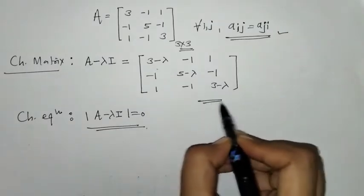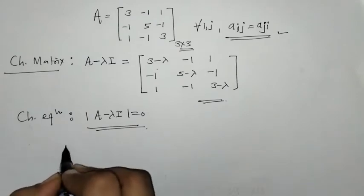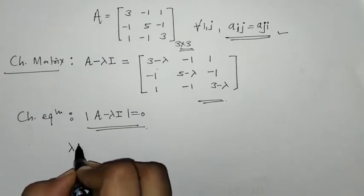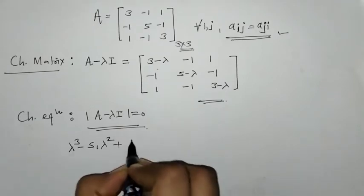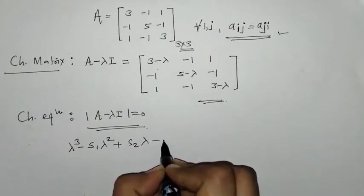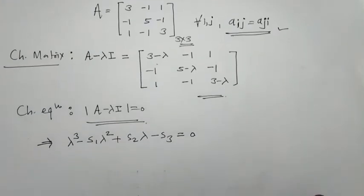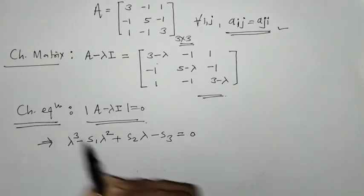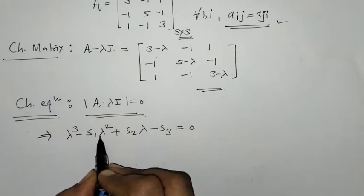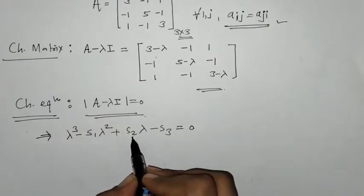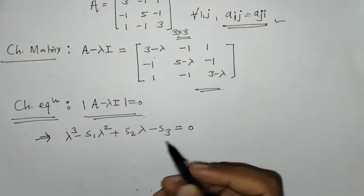Now when we solve the determinant of this matrix, we will get an equation of the form: lambda cubed minus S1·lambda squared plus S2·lambda minus S3 equals 0. This is the characteristic equation, where we have to find S1, S2, and S3. S1 is the sum of diagonal elements, S2 is the sum of minors of diagonal elements, and S3 is the determinant.